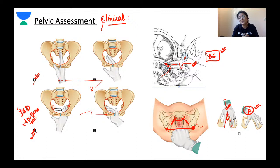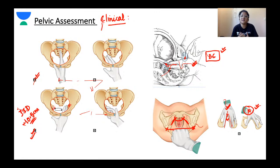For a primigravida who has never delivered vaginally, pelvic assessment is scheduled and done anytime beyond 37 weeks when the woman is at term. For a woman who has had a vaginal delivery in the past, there is no need for routine pelvic assessment. One can also do the pelvic assessment during labor.